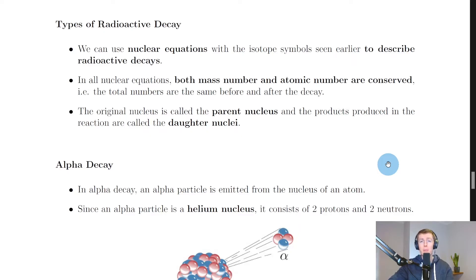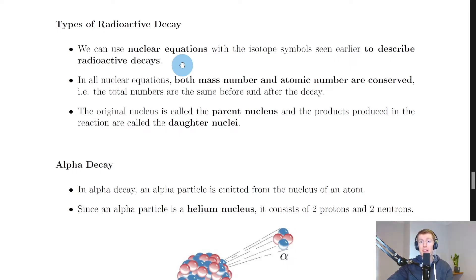We can use nuclear equations with the isotope symbols seen earlier to describe radioactive decays. Remember we saw the symbols for isotopes in the video on isotopes, where we have the element symbol, the mass number on the top left, and the atomic number on the bottom left. We can use these symbols to create nuclear equations to describe radioactive decays and see what's going on in a reaction.